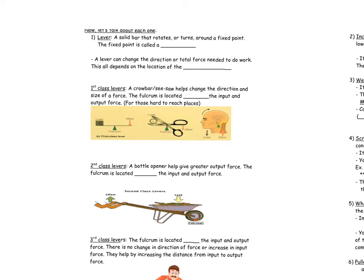The first simple machine is a lever. A lever is a solid bar that rotates or turns around a fixed point called a fulcrum. A lever can change the direction of the force you're using to do work, or change the amount of force — and all that depends on where the fulcrum is located. Think about seesaws, scissors, and even the joints where your spine and skull come together: when you move your head up and down, you're using a lever.